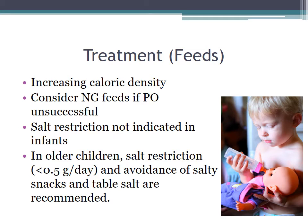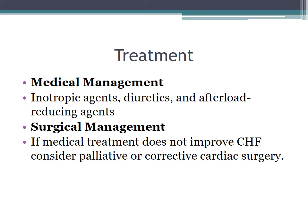If a baby is in CHF, treatment starts with increasing caloric density — you can do 22 or 24 calorie per ounce formula, or drop an NG tube. Salt restriction is indicated in older children (less than 0.5 grams per day) but not in infants. CHF can be treated medically with diuretics and afterload reducers; depending on severity, inotropes may be used. If medical treatment isn't improving CHF, consider palliative or corrective cardiac surgery.